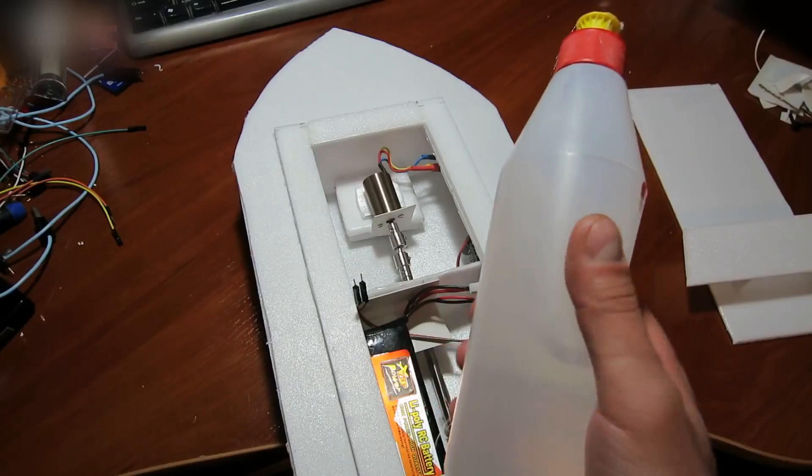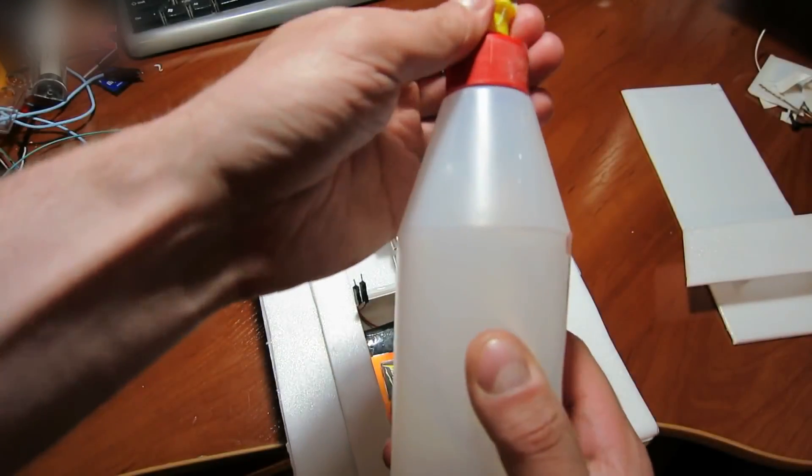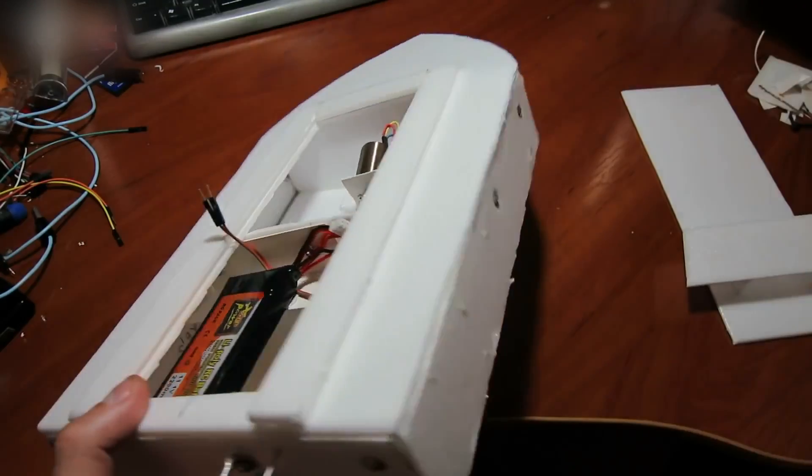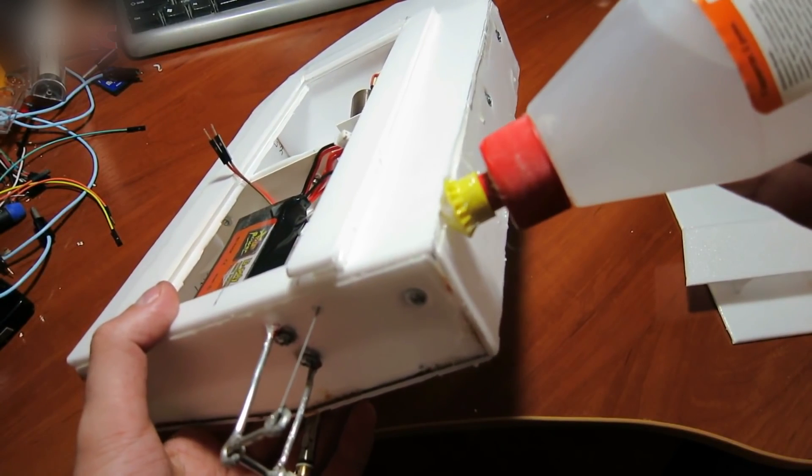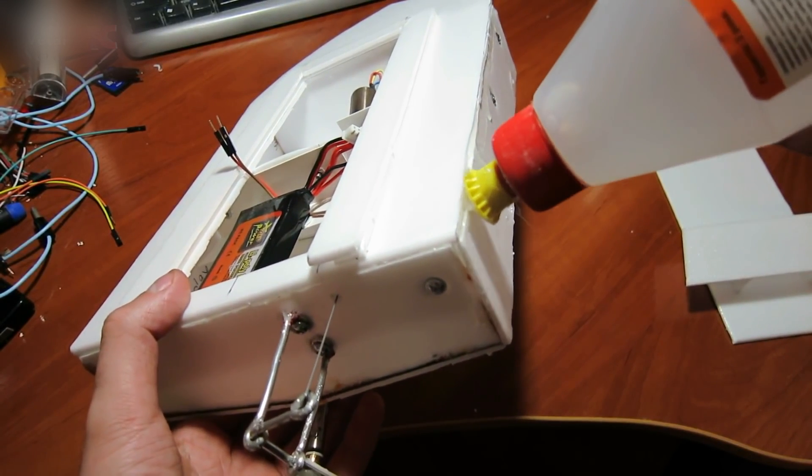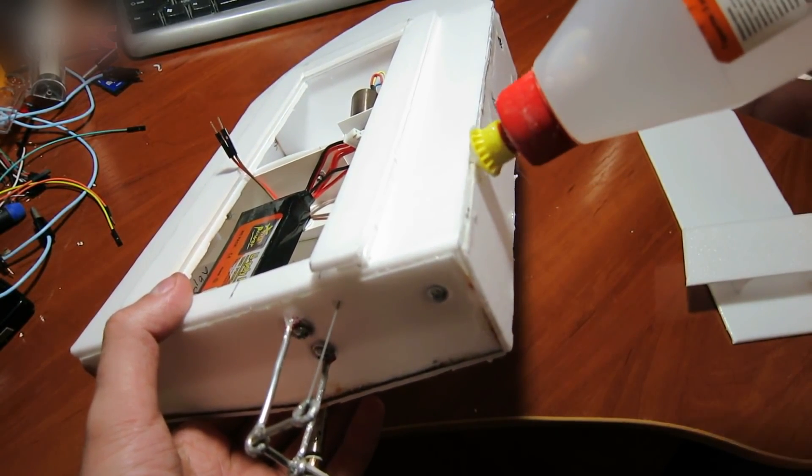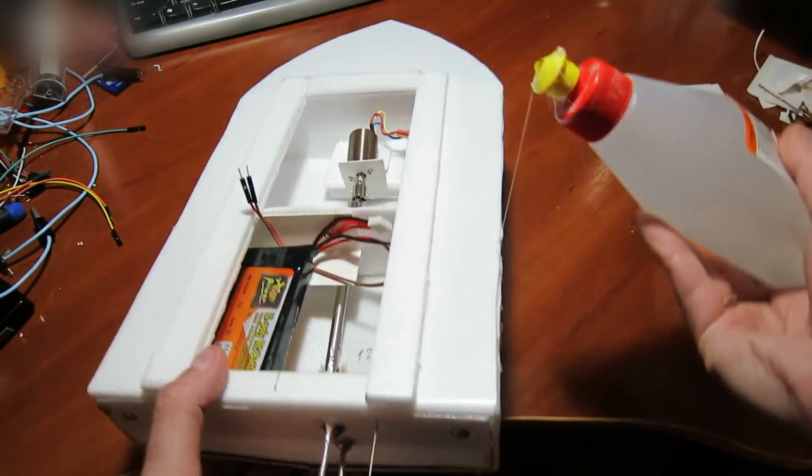Now, glue the cover piece with the two-component adhesive. After everything is dried, take some polymer glue and apply it over all of the seams. The battery is the heaviest part of the boat. We need to secure it a little to the left of the axle shaft so that the boat swims in a straight line.